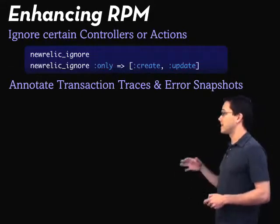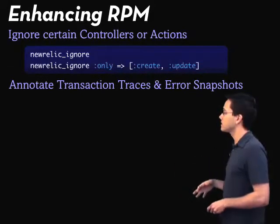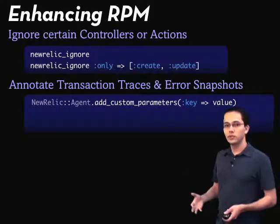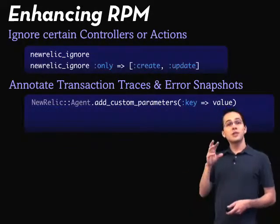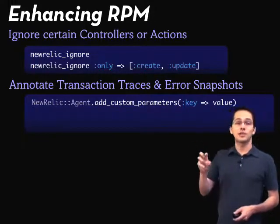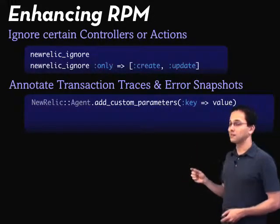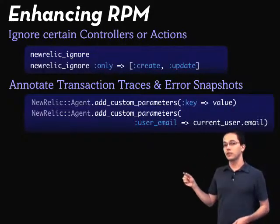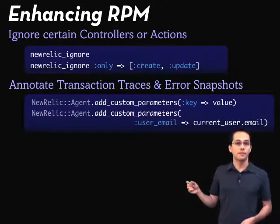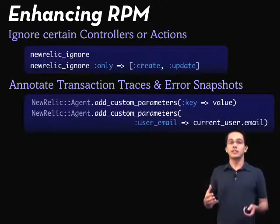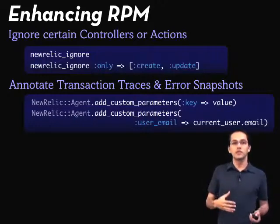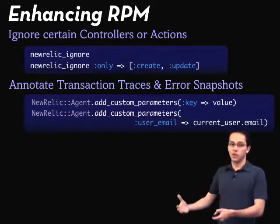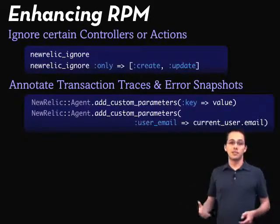You can also annotate the transaction traces and error snapshots, which are really cool. Transaction traces are basically a snapshot of a single request coming into the system. We can actually have it log which user that request was coming from, so that later if we improve it, we can log in as that user, see if it's still that slow, and hopefully confirm it's improved.